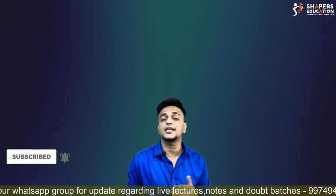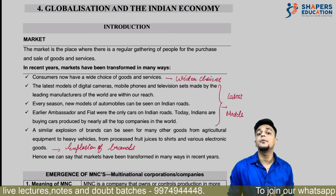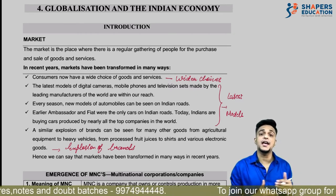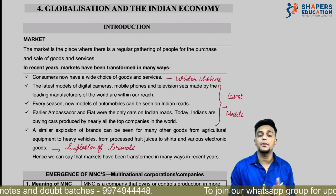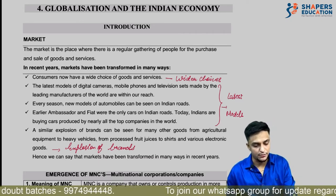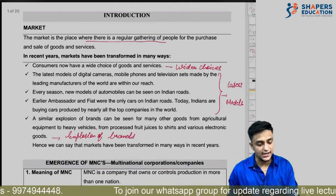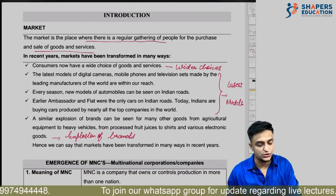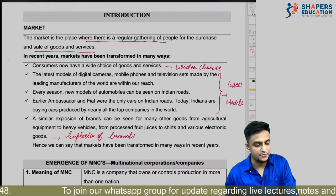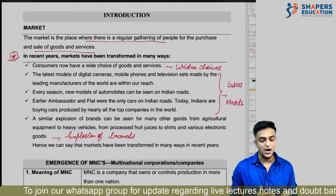First we have been given the introductory part — the definition of market, which everyone knows: a place where purchase and selling of goods takes place. There is a regular gathering of people, a crowd, and purchase and selling of goods happens — that we call a market.